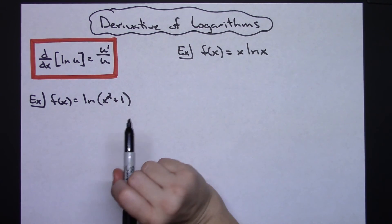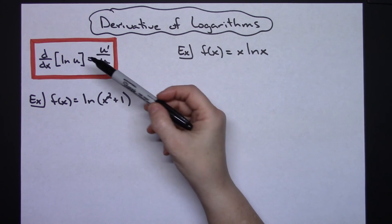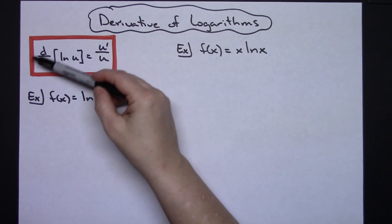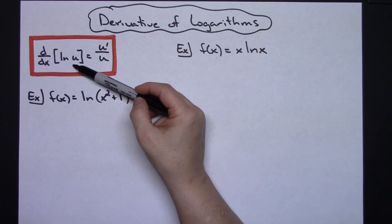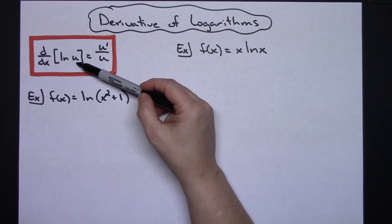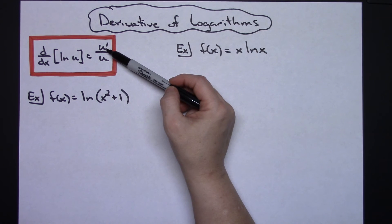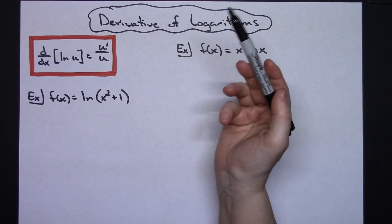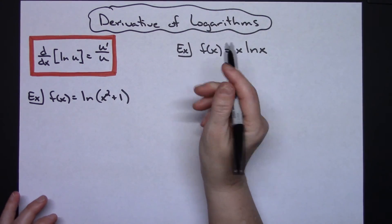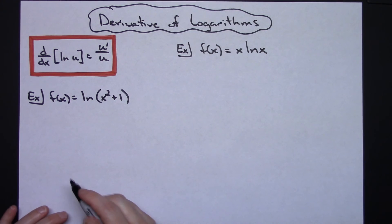In this video I'm going to be taking a look at how you would take the derivative of logarithms. The main formula that we're going to be using is the derivative of the natural log of u, where u is a function of x, and that derivative would be found by taking u prime over u. We'll do about four examples here with different scenarios and how you might apply this derivative.